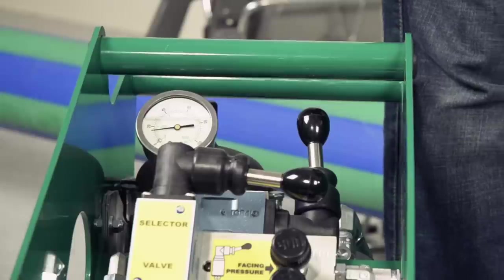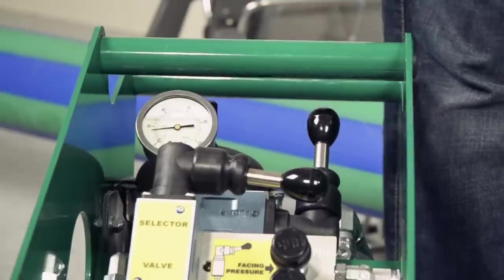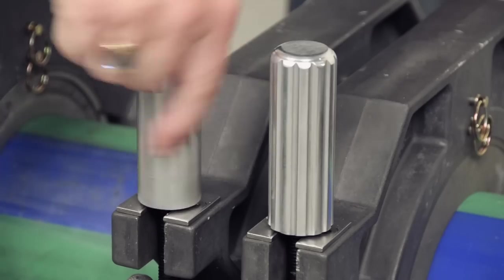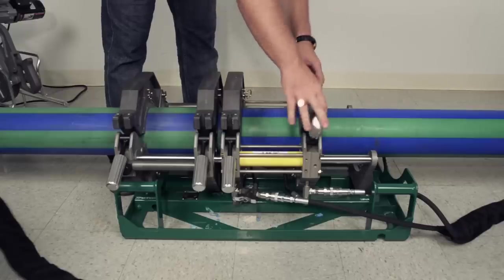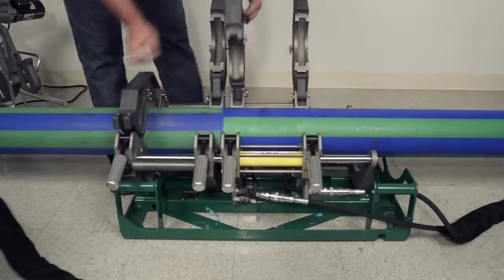Now that the cooling cycle is completed, let's shift the carriage control valve to neutral. Loosen the clamp knobs and open the carriage. Open the jaws and remove the fused pipe.